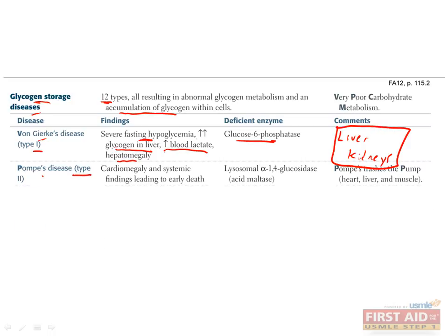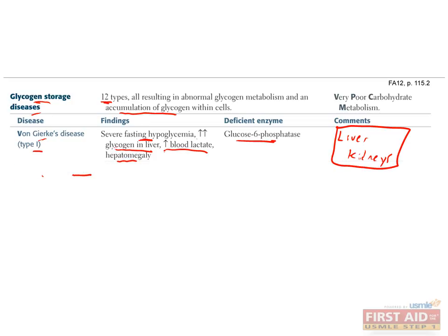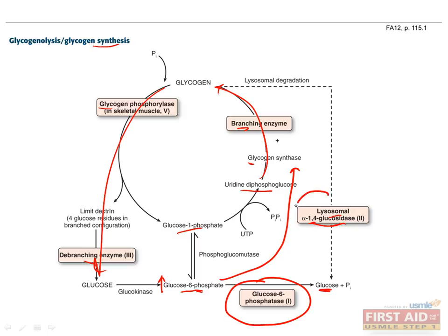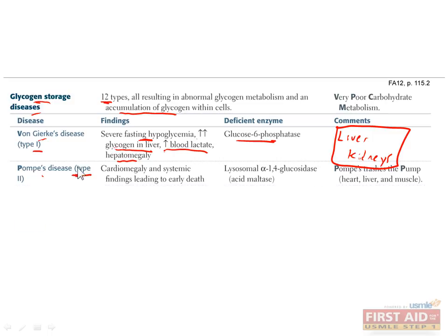Type 2 glycogen storage disease, or Pompe's disease, is caused by deficiency in lysosomal alpha-1,4-glucosidase, which breaks down glycogen into glucose in the lysosome. This is a very serious disease that mostly affects the heart, the liver, and the muscle. Findings include progressive muscle weakness, breathing and feeding difficulties, hyporeflexia or areflexia due to glycogen accumulation in spinal motor neurons, and cardiomegaly, which can cause congestive heart failure and restrictive cardiomyopathy — in some cases deadly within the first two years of life.